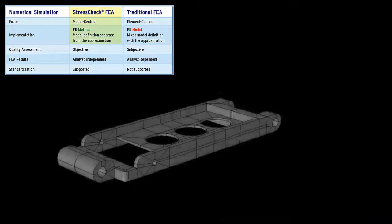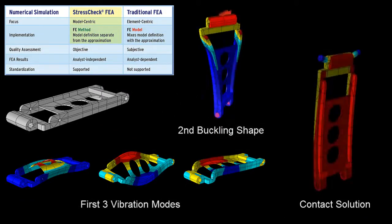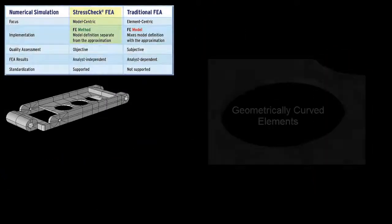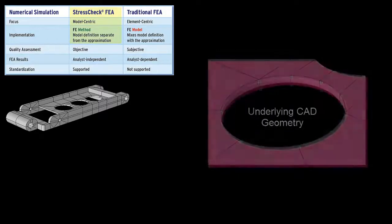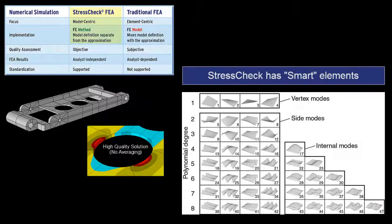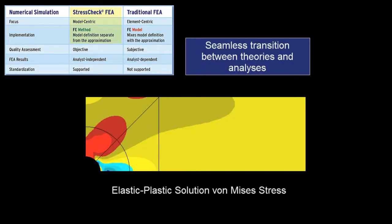In StressCheck, the same element can be used for any supported analysis type or theory, with independent approximation control. Also, the curvature of the element is allowed to snap to the underlying geometry. As mentioned previously, our elements are designed to be intelligent enough to keep up with an engineer's demanding work environment. Do you need to switch from linear to nonlinear for your current model? StressCheck allows you to switch analysis hierarchies on the fly, seamlessly.